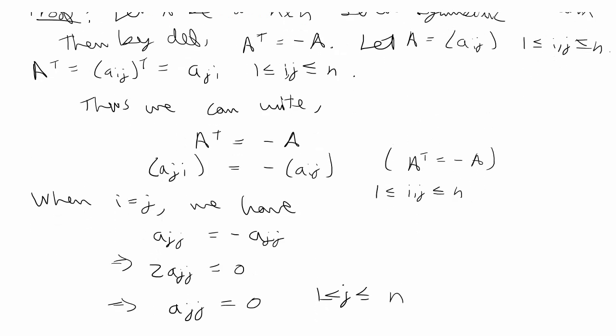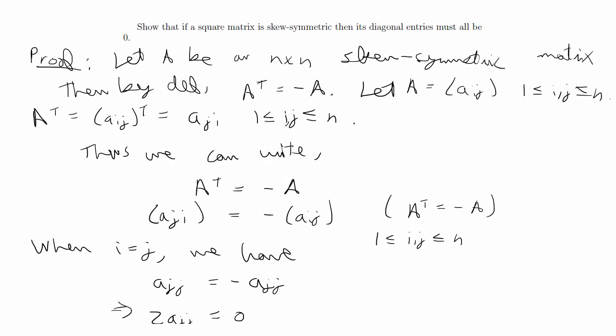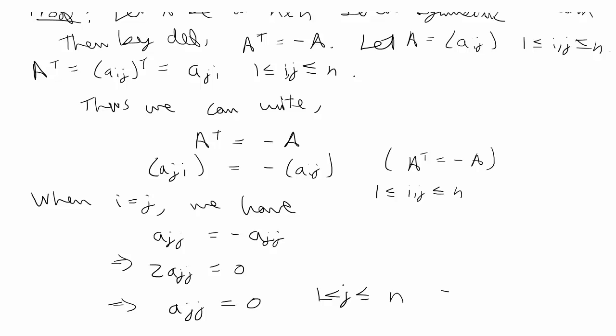That means aii must equal zero when 1 ≤ i ≤ n. That's a sufficient proof that if you have a skew symmetric matrix, then its main diagonal entries must all be zero. And we're done.